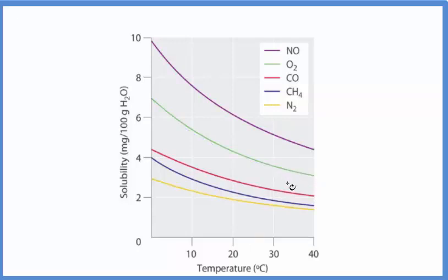So to recap: oxygen is soluble in water, although it depends on the temperature of the water. As the temperature increases, the solubility of the oxygen decreases. This is the opposite of what we see for most ionic compounds.